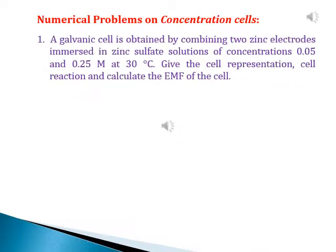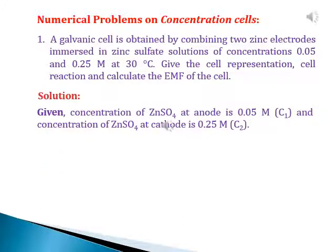First problem: a galvanic cell is obtained by combining two zinc electrodes immersed in zinc sulfate solutions of concentrations 0.05 and 0.25 moles at 30 degrees centigrade. Give the cell representation, cell reaction, and calculate the EMF of the cell. Given: concentration of ZnSO4 at anode is 0.05 M (C1) and concentration of ZnSO4 at cathode is 0.25 M (C2).